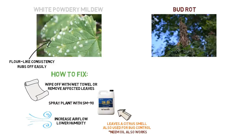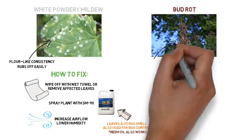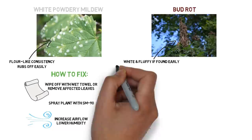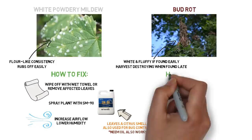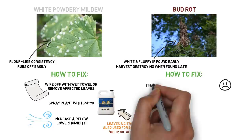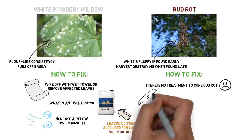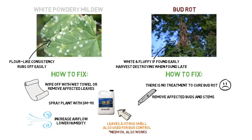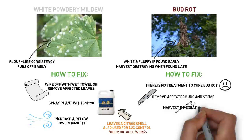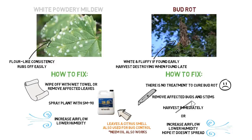Bud rot is much harder to detect because it thrives in dense buds and is hard to see until it's too late. If found early it'll look white and fluffy, but typically by the time it's discovered, parts of the bud are dying, turning brown and gray, and falling apart to the touch. There is no cure for bud rot. If discovered, remove any affected parts and either harvest the rest before it spreads, or add more air circulation, lower humidity, and remove extra foliage to minimize further spread.